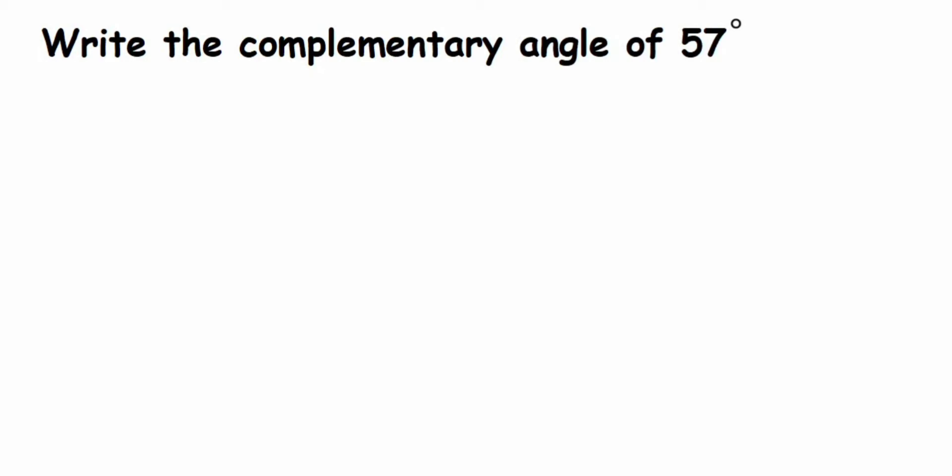Hey everyone, here is a question from lines and angles. The question is very simple, it can come for one or two marks. Write the complementary angle of 57 degrees. So we know that complementary angles are the angles when we add two angles, the sum should be equal to 90 degrees.